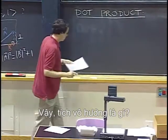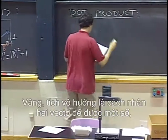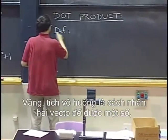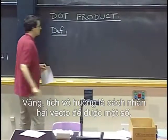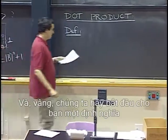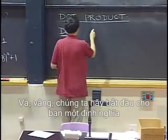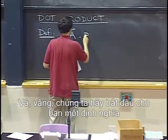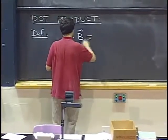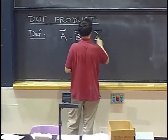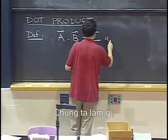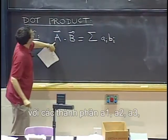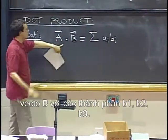So, what is dot product? Well, dot product is a way of multiplying two vectors to get a number — a scalar. Let me start by giving you a definition in terms of components. Let's say that we have a vector a with components a1, a2, a3,